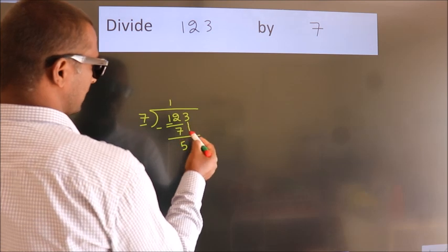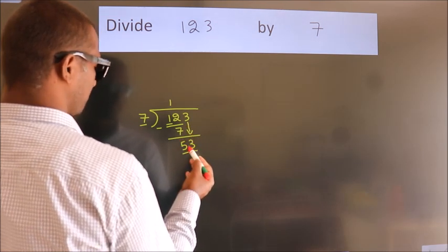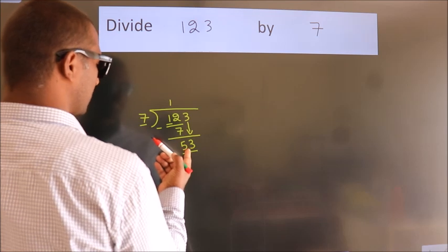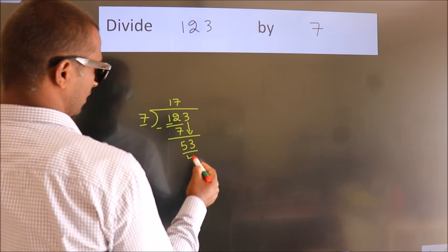After this, bring down the beside number. So 3 down. So 53. A number close to 53 in 7 table is 7 sevens 49.